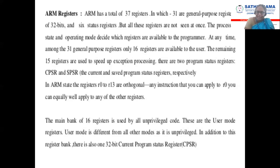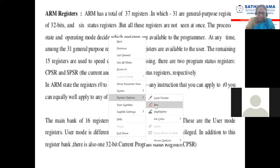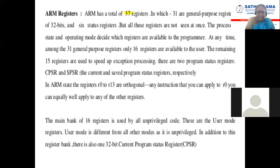We will now go directly into ARM registers. While moving from microprocessor to microcontroller, the number of registers keeps increasing. We have seen bank registers in 8051, and PIC microcontroller also has bank registers. Similarly, ARM has a total of 37 registers — among those 37 registers, 31 are general purpose registers.